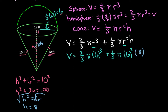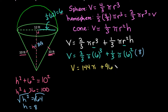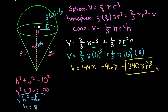Now it's a matter of simplifying. When dealing with volume, read your directions carefully — they may want an exact answer in terms of pi. Six cubed is 216; multiplied by two-thirds gives 144 pi. Then six squared is 36, divided by 3 is 12, times 8 gives 96 pi. Adding these together: 144 pi plus 96 pi equals 240 pi cubic feet. That is the exact answer.